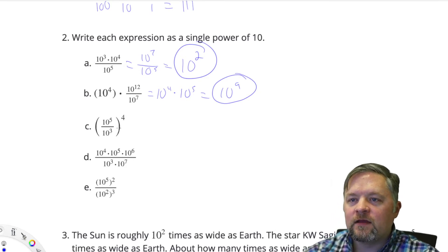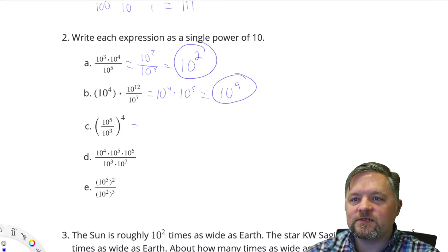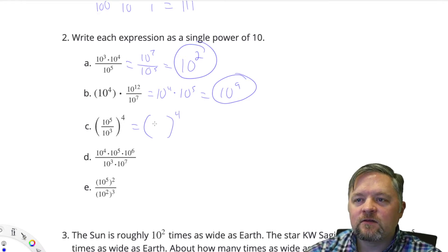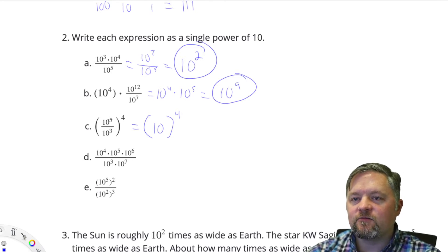How do we want to deal with this? PEMDAS says let's deal with what's in the parentheses first. So we're still going to have parentheses to the power of 4. We know it's going to be 10 to the power of something. 10 to the 5 divided by 10 to the 3 means we subtract the exponents. 5 subtract 3 is 2.